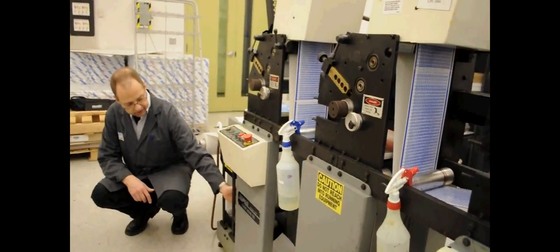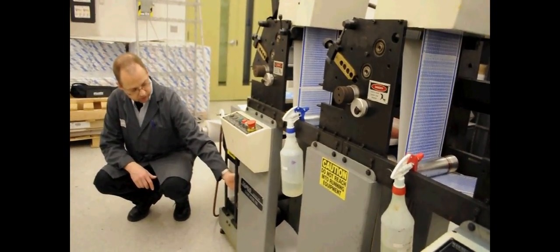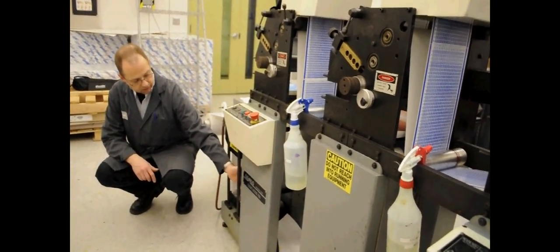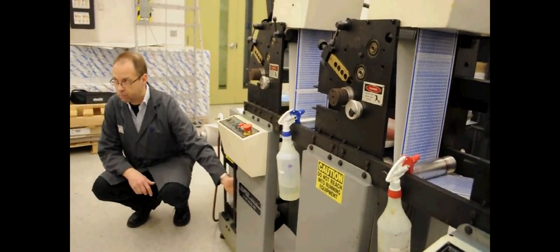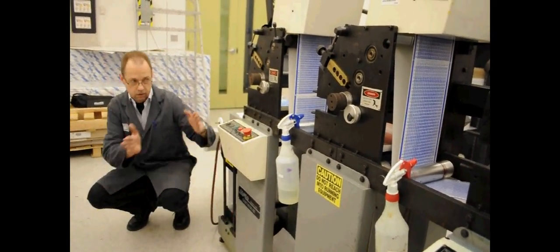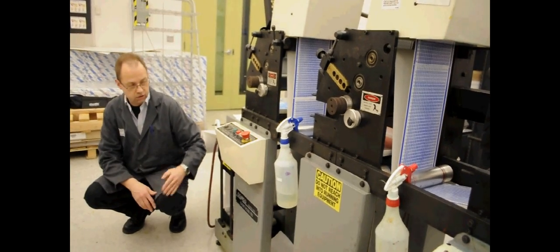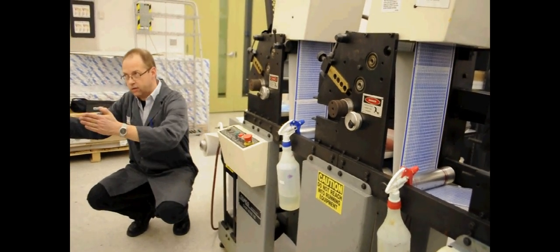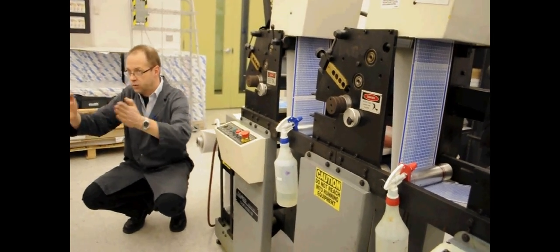When I simulate that the paper web covers the sensor, it steers the bottom two rollers to go more into the press, so I am simulating that the web wanders out and it tries to steer it back.